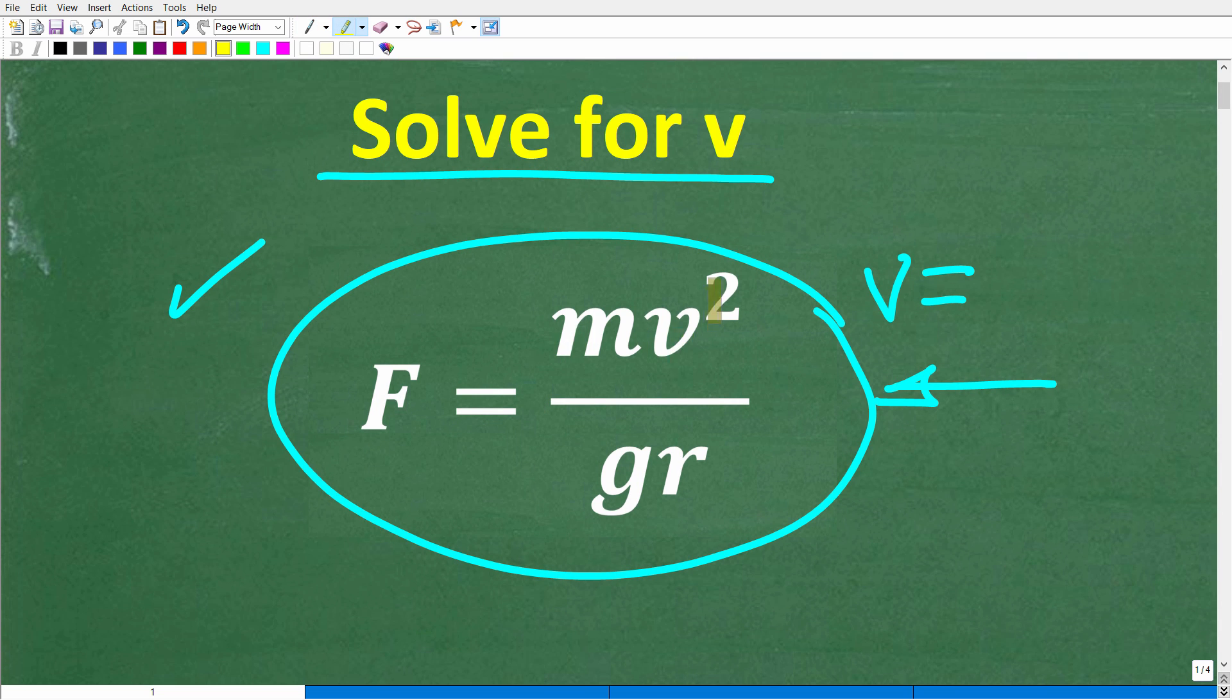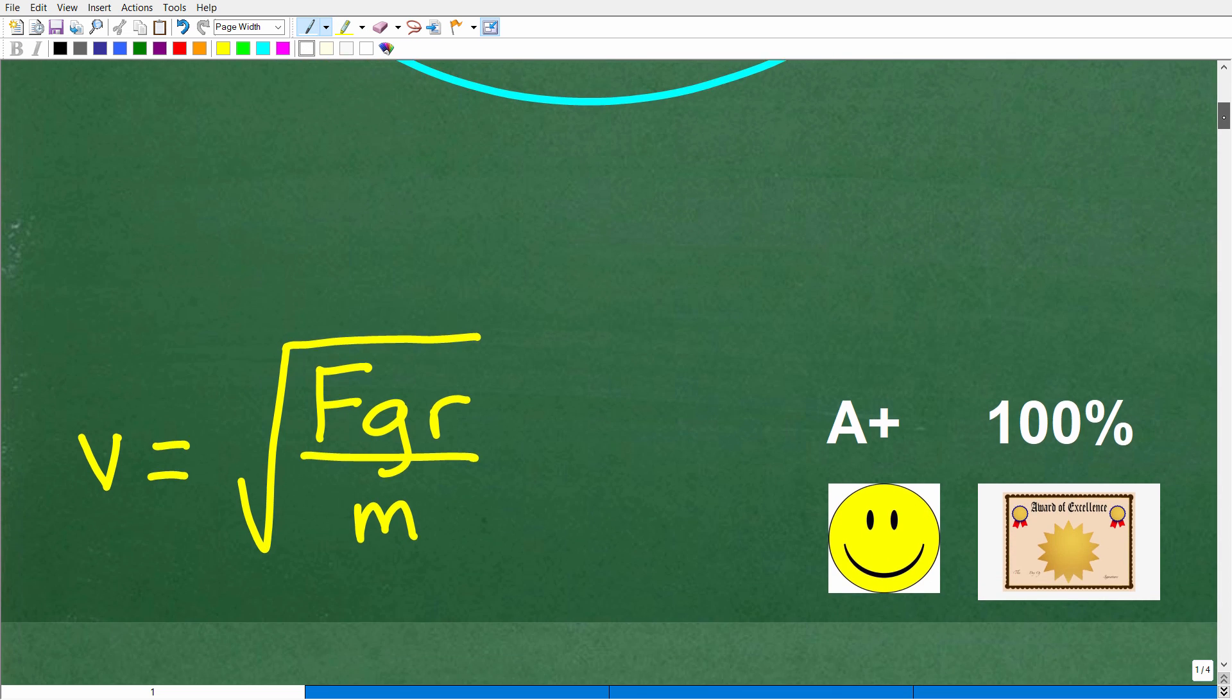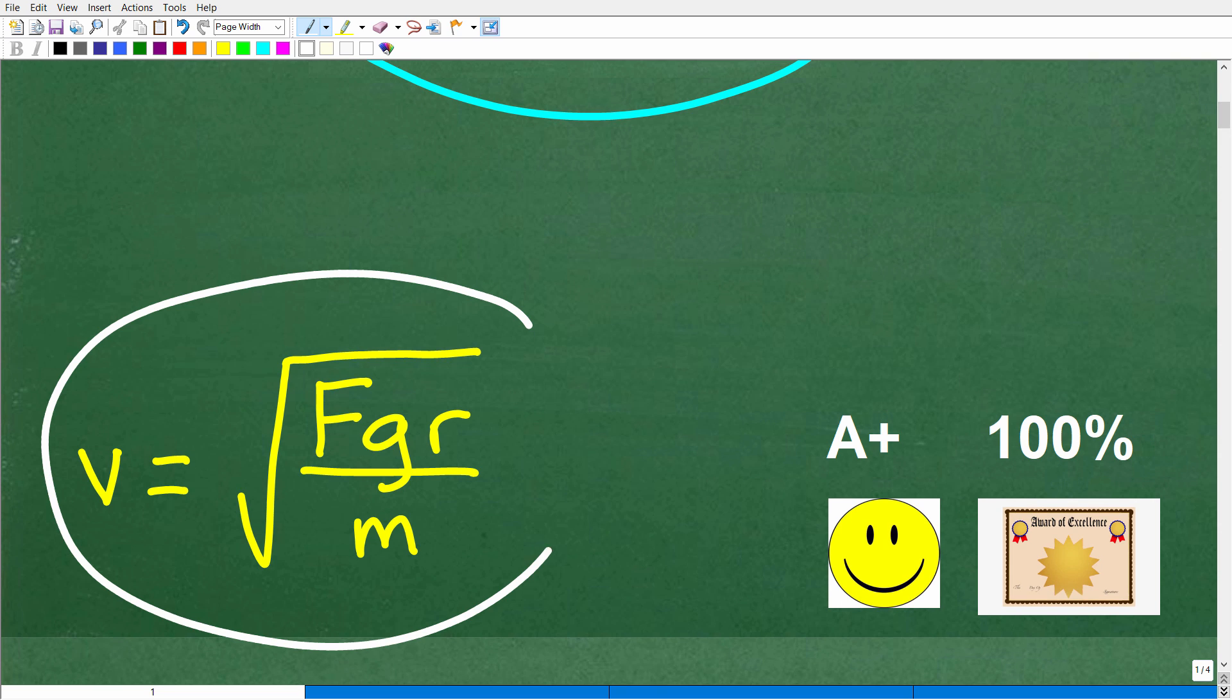All right, so let's go ahead and take a look at the formula one more time. So F is equal to m times v squared over g times r. And what we're looking to do here is solve for v. So v is equal to what? Well, let's go ahead and take a look at the answer. The correct answer is the following. v is equal to the square root of f times g times r over m.